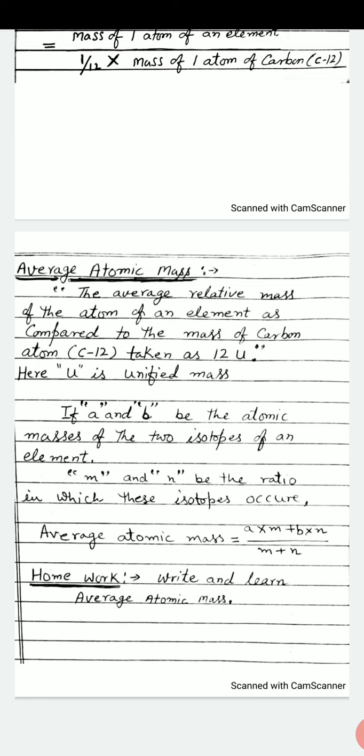Average atomic mass is equal to A multiplied by M plus B multiplied by N divided by M plus N.